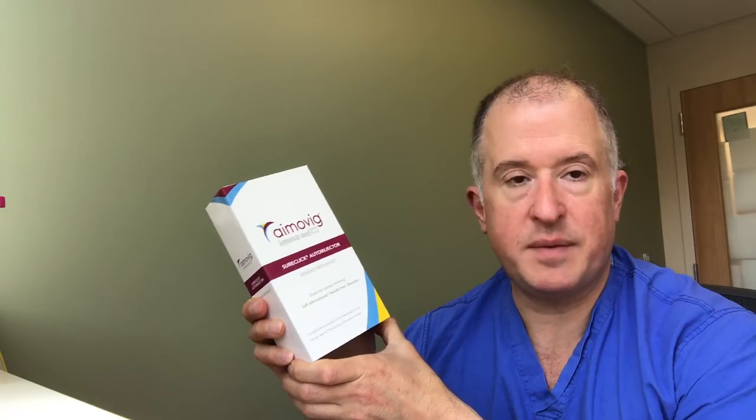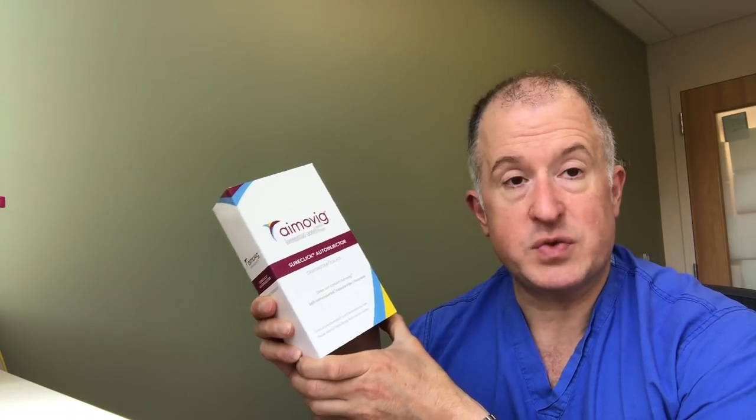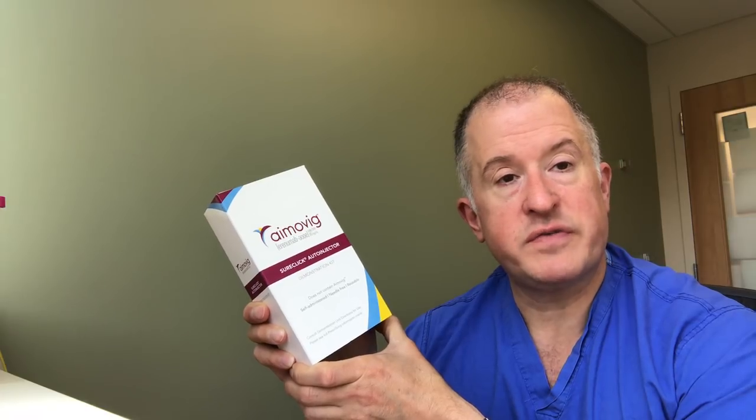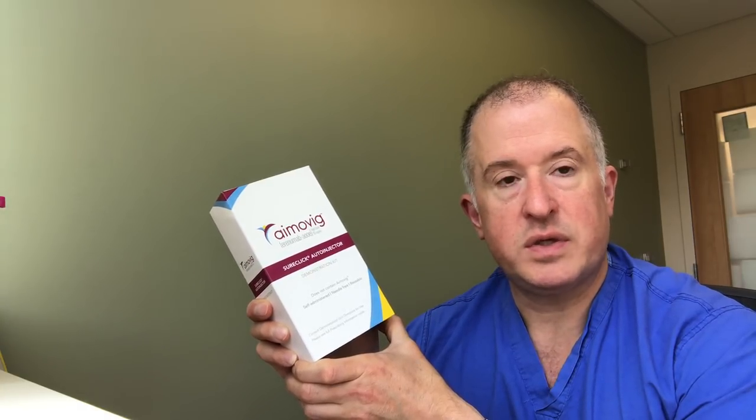Patients who get Amovig will get it by prescription after talking with their doctor about whether Amovig is right for them and what dose will be correct. Amovig comes in two doses, 70 milligrams and 140 milligrams, and the patient will self-administer Amovig once a month.